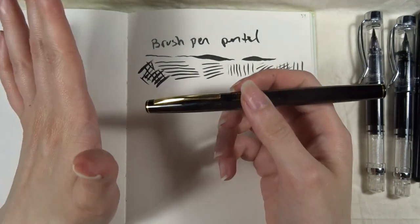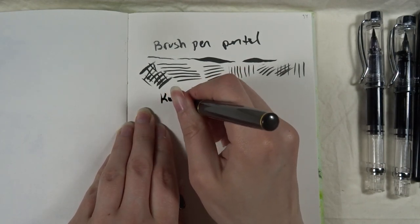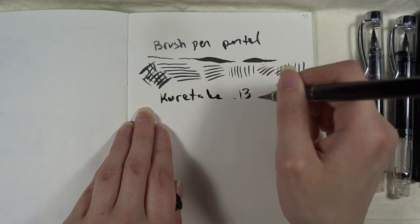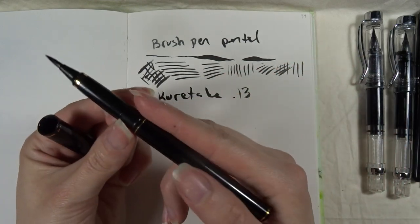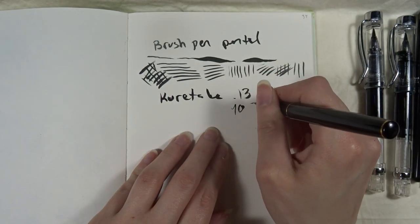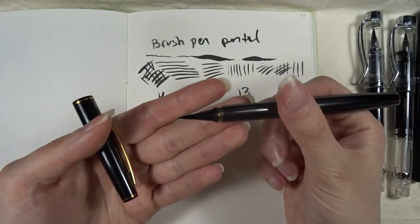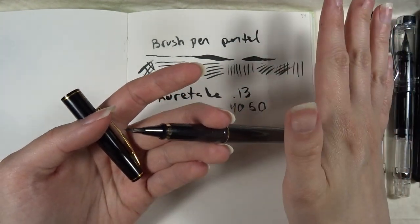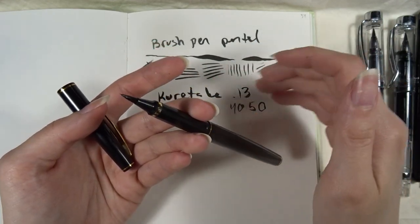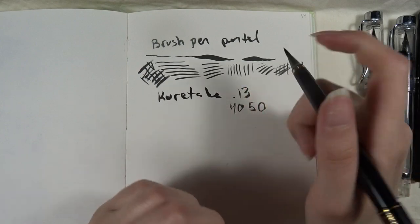This is the Kuretake brush pen, and this is number 13. They have many of these brush pens actually, and 13 is the cheapest and it has the plastic bristles. If you get the Kuretake 40 or 50, they have natural hair brush. At the time I got this pen, it was cheaper to get the refill part for the 40 and 50 and the body for the 13 because they all are interchangeable. They are basically the same pen, only the brush heads change.